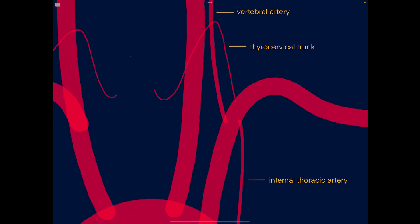The thyrocervical trunk arises off the superior aspect of the subclavian artery, usually at about the same level as the internal thoracic artery. It gives off many branches with a lot of variation, but it almost always terminates in two arteries: the inferior thyroid artery, which supplies the thyroid, parathyroid, larynx, esophagus, trachea, and surrounding muscles; and the ascending cervical artery. These are the two terminal branches of the thyrocervical trunk.